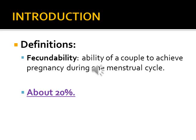Fecundability is the ability of the couple to achieve pregnancy during one menstrual cycle without use of contraception. It is about 20 percent in each cycle.